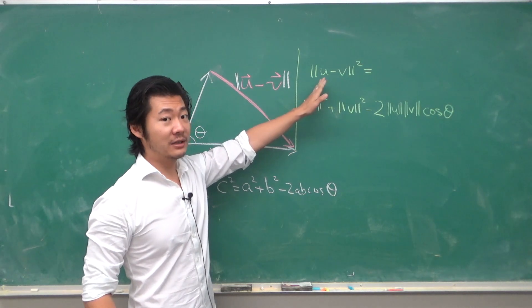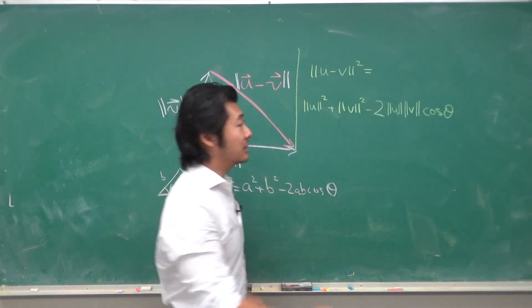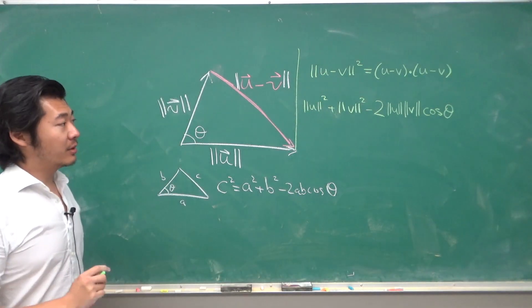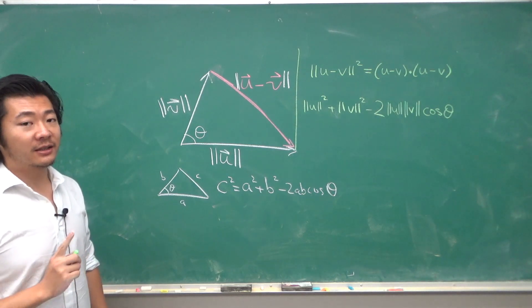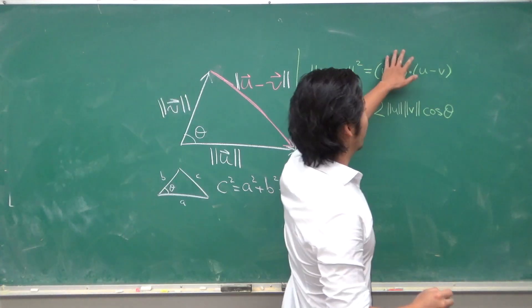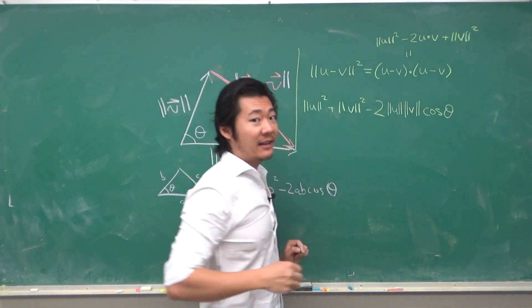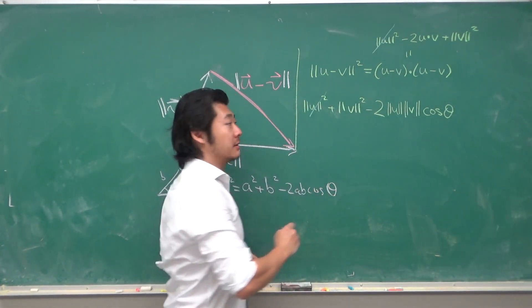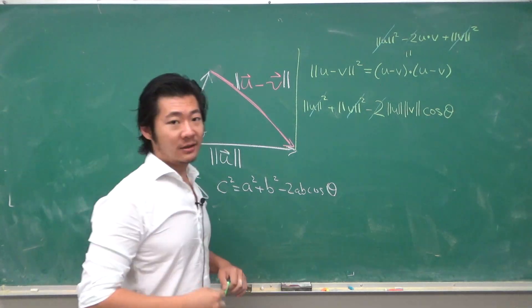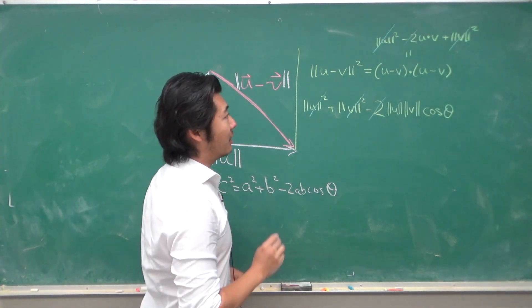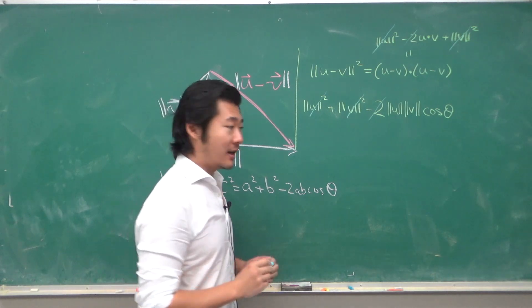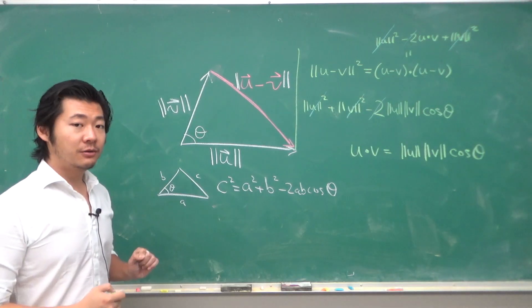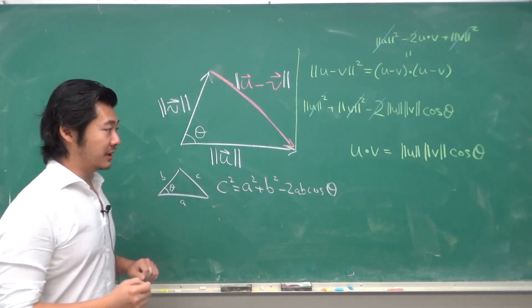But remember that we can rewrite U minus V square in terms of the dot product, and then because the dot product is a multiplication which had the distributive property, we can multiply this out. Here we use the fact that U dot V is equal to V dot U. So the U squares cancel, the V squares cancel, the twos cancel, and so now we can rewrite U dot V as the magnitude of U times the magnitude of V times cosine theta.